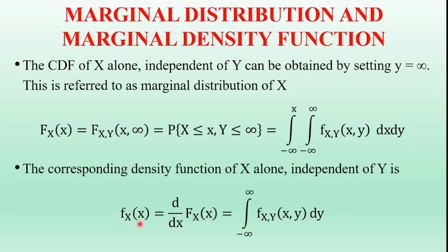Here, small f_X of x is the probability density function and capital F_X of x is the probability distribution function of random variable X. Substituting the expression for capital F_X of x and taking the derivative with respect to x — the integral with respect to x cancels — the remaining term is the integral from minus infinity to infinity of f_XY of (x, y) dy. This is the marginal density function of random variable X.